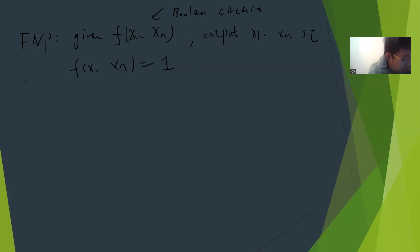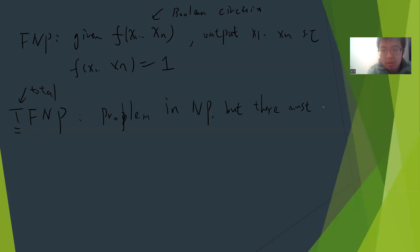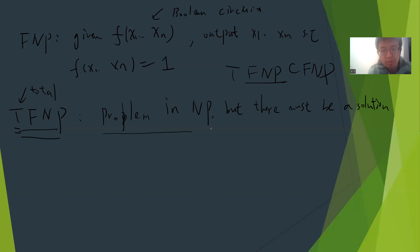From here one can define a very weird class called TFNP — the T means total. So TFNP is another complexity class such that the problem is in NP, but it's guaranteed there is a solution — there must be a solution. So TFNP is a special case in NP, basically it's a subset of FNP. TFNP is just something that the problem is in NP but, due to some weird thing, this guy always has a solution.